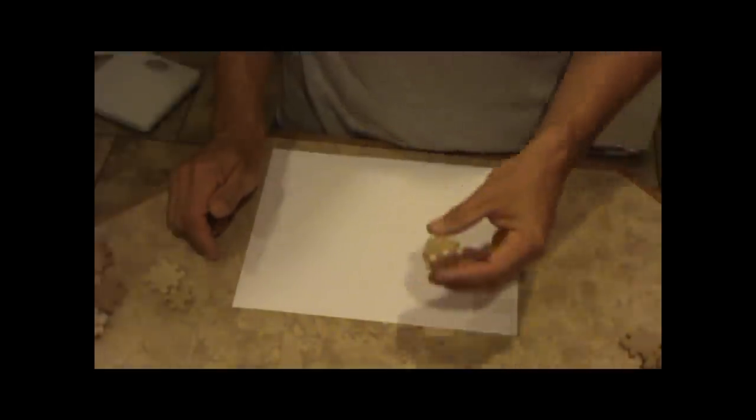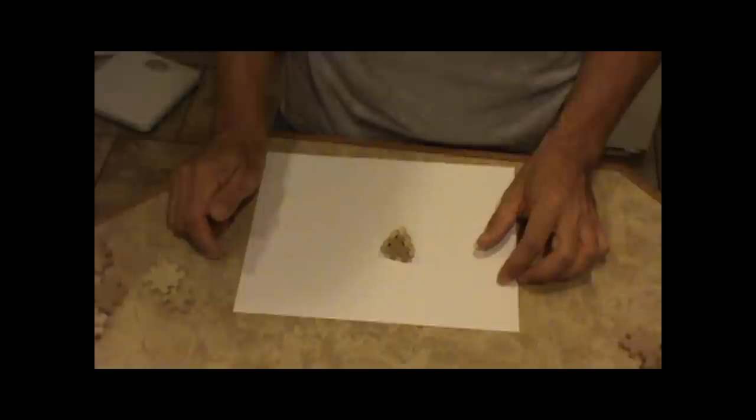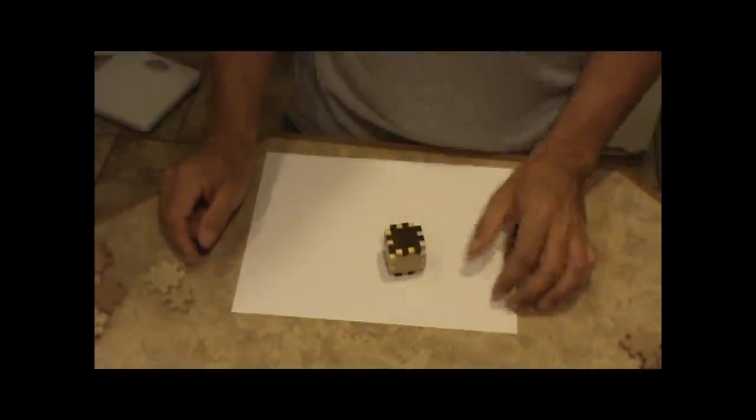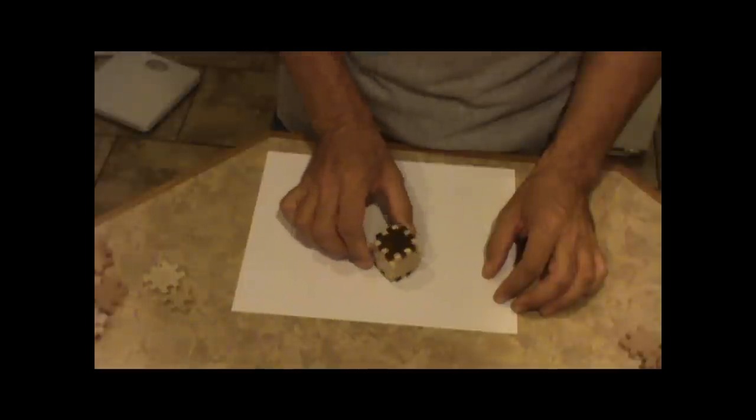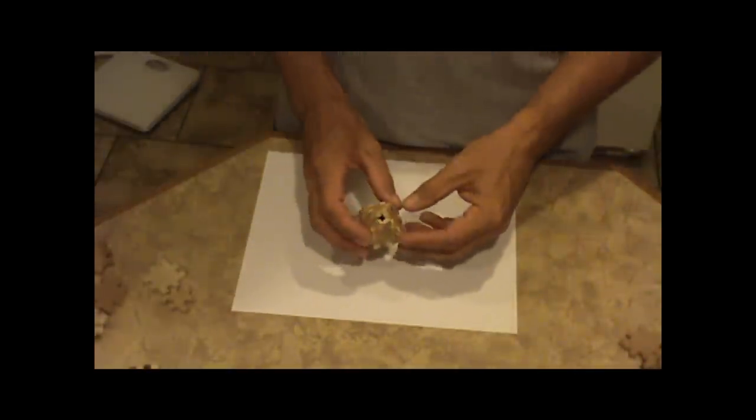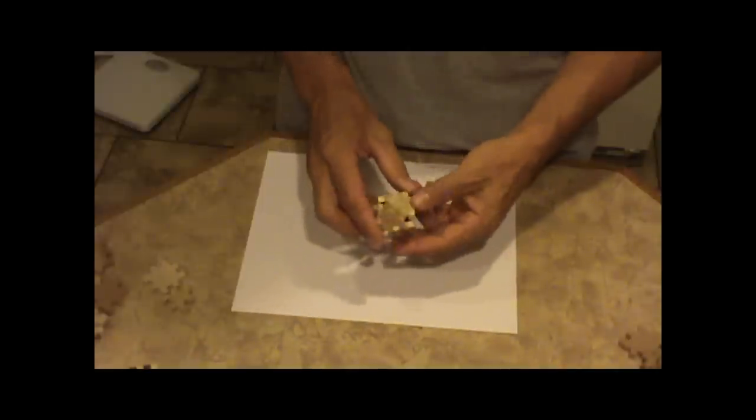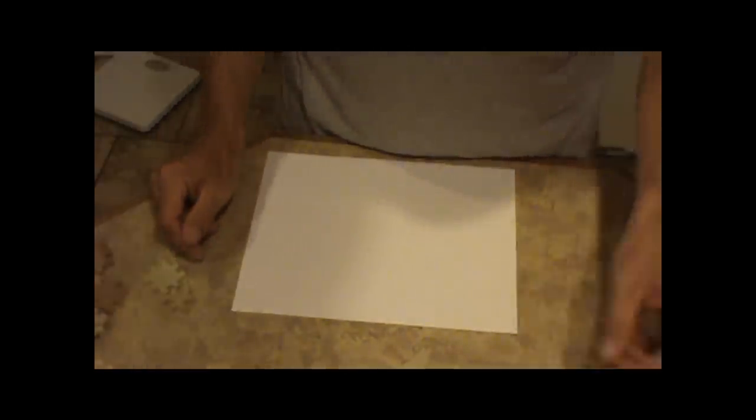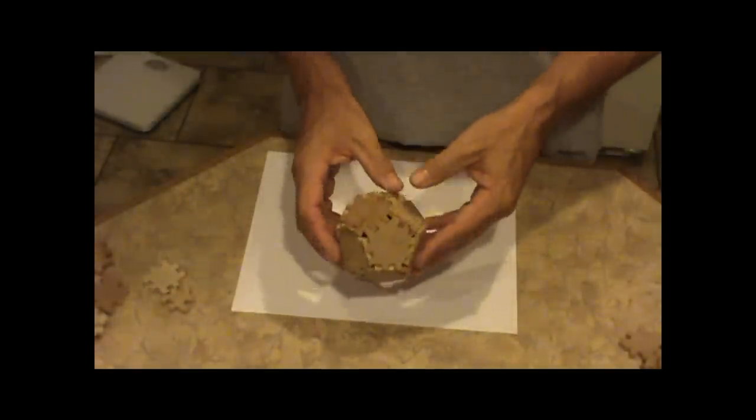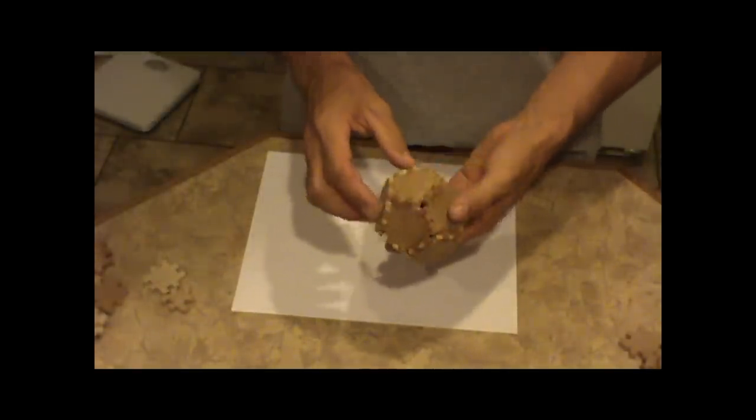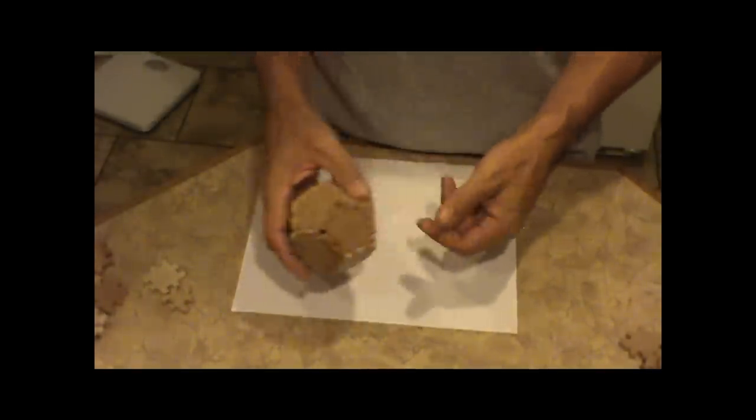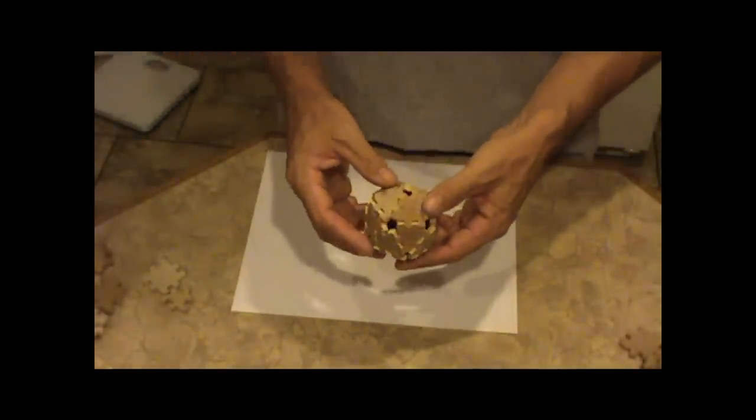The first one is the tetrahedron. It's four triangles. The cube, six squares. You're probably familiar with it already. Octahedron is eight triangles. And the regular dodecahedron is made of 12 pentagons. And the icosahedron is 20 equilateral triangles.